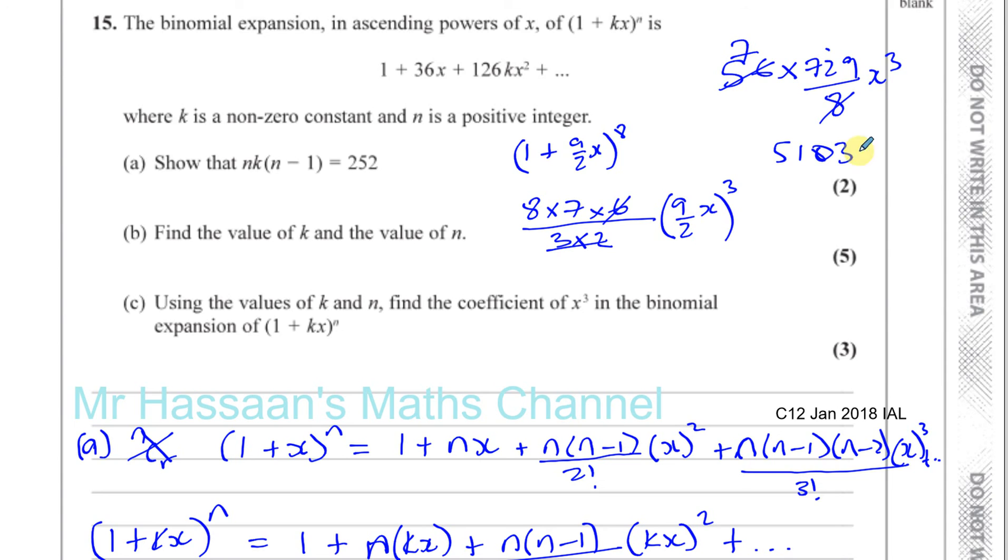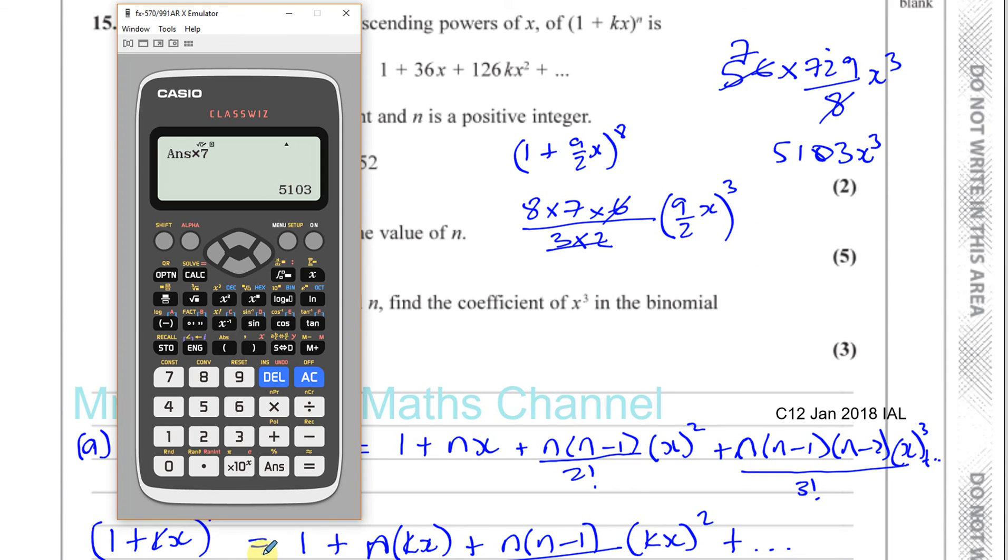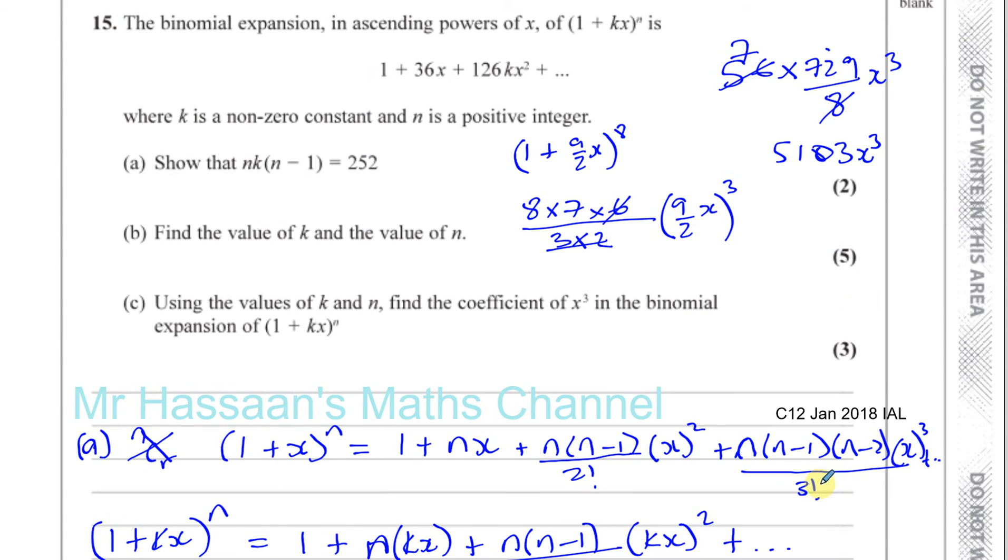5,103 times x cubed. Is that right? Is that 3 factorial or 3 times 2? 3 factorial means 3 times 2 times 1, which is the same as 3 times 2. Yes? Okay. So, 5,103 x cubed should be, alright. It says find the coefficient of x cubed. So, your answer should be written as 5,103.